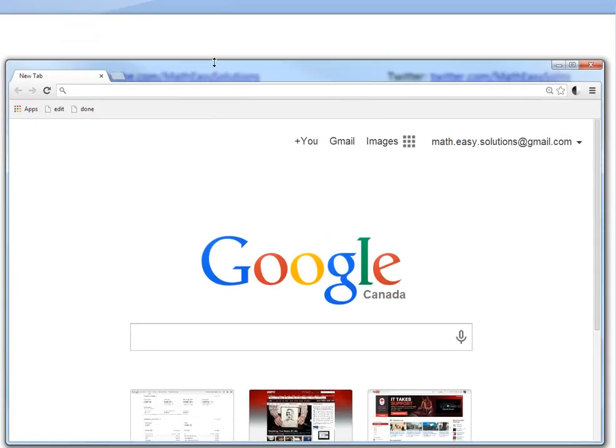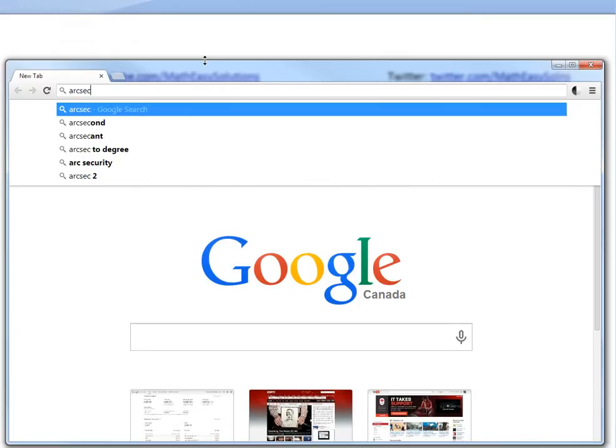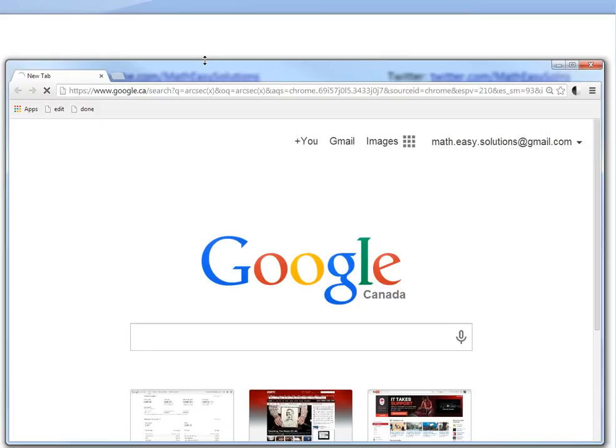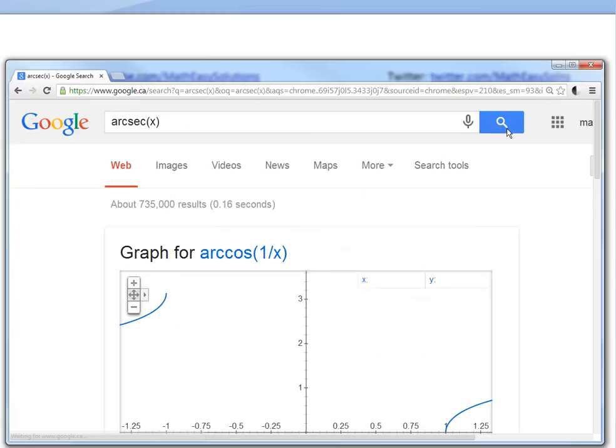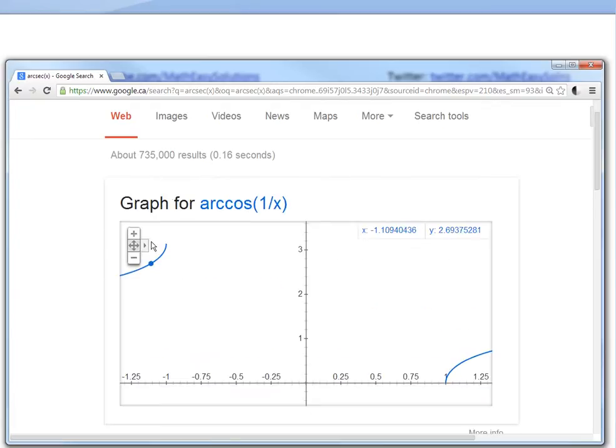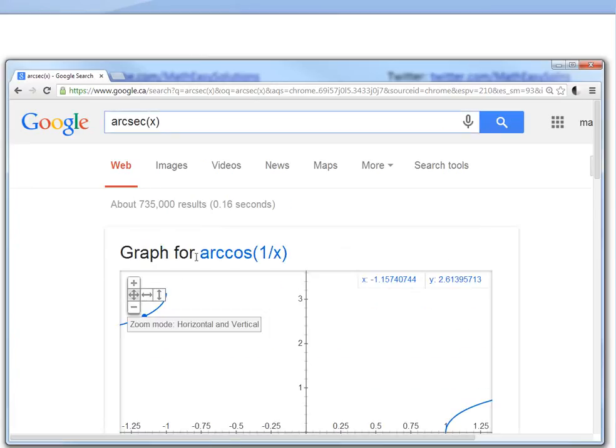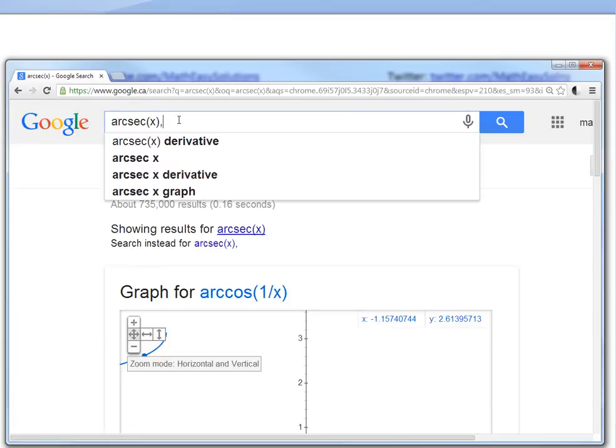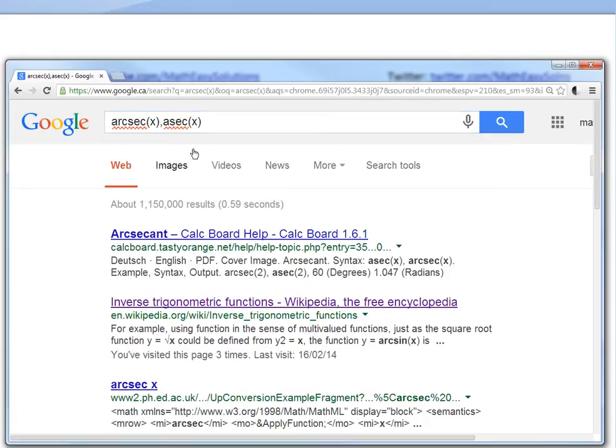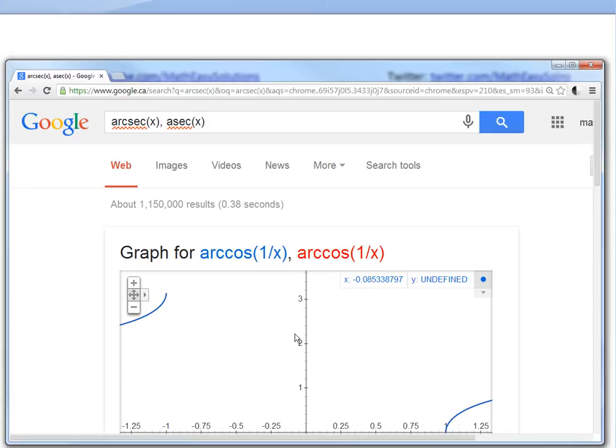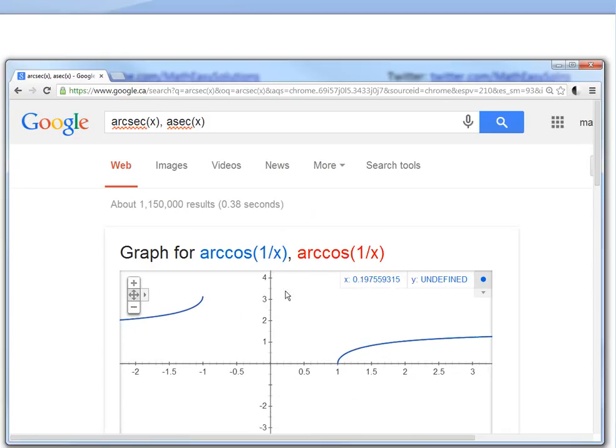So I'll just drag this up and write arc secant of x. It shows up there, so there's a graph of it. As you can see, it automatically writes it as arc cos 1 divided by x. So this means the same thing. These mean the exact same thing, and it basically overlaps, that's why it's the same color.